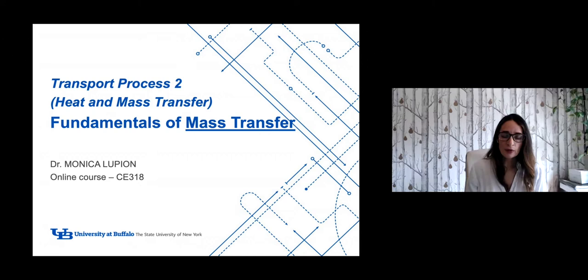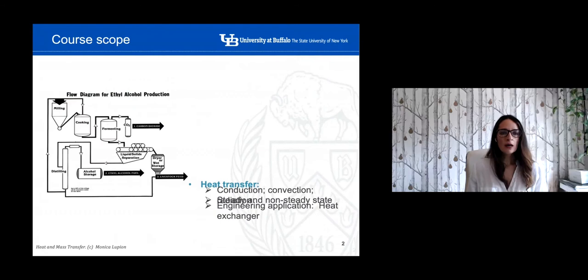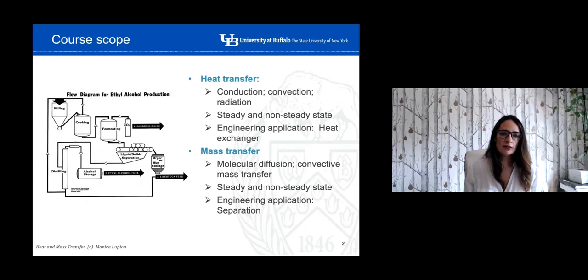We're going to see membrane separation systems. I'm also going to go over a few specific examples of equipment for mass transfer. As I mentioned from the introduction, it's very common in industry and particularly in chemical plants to have different equipment where heat transfer and mass transfer happen at the same time.